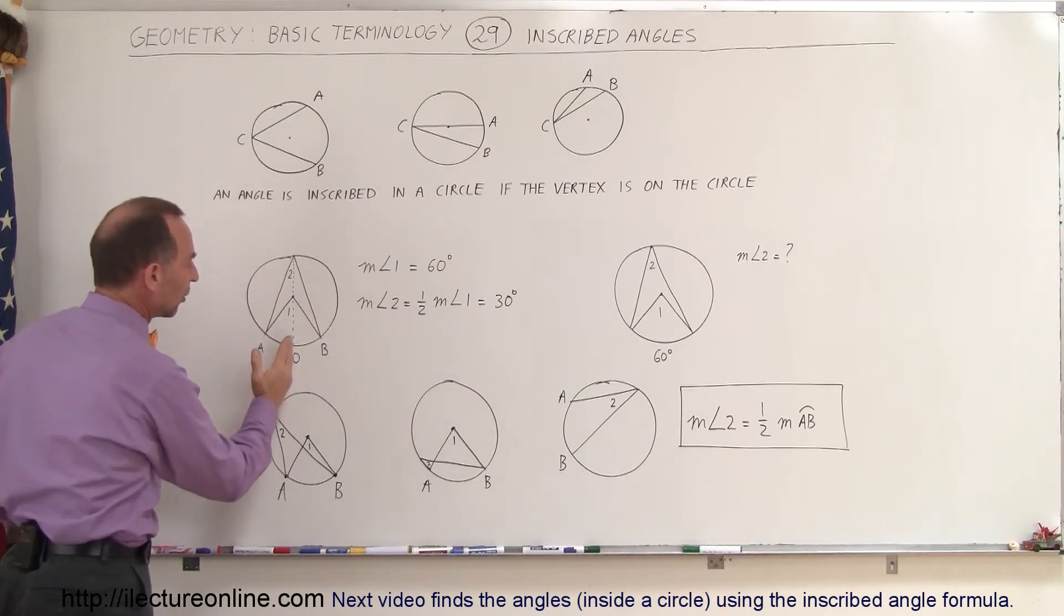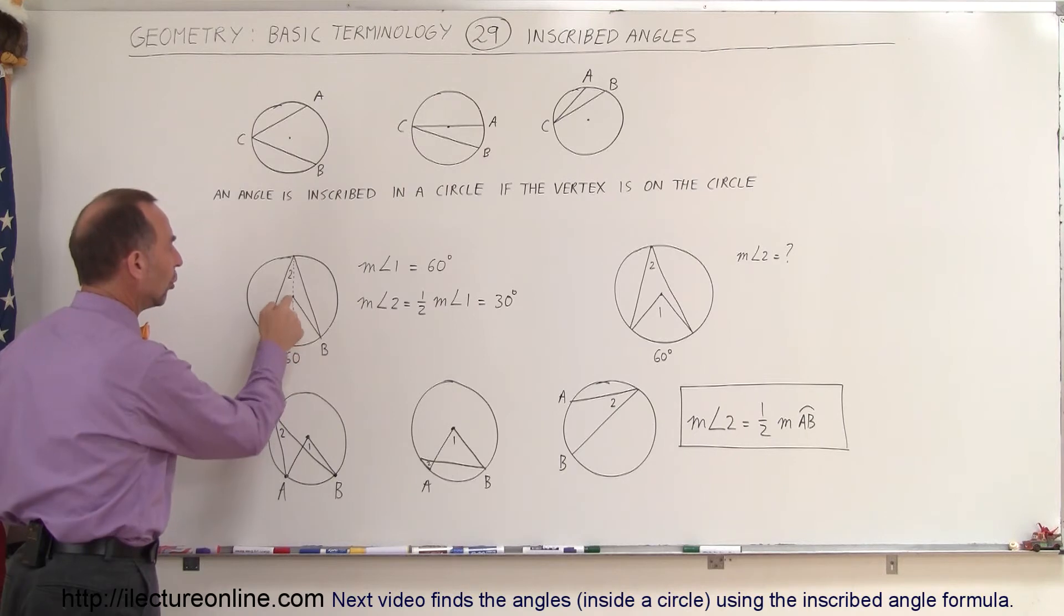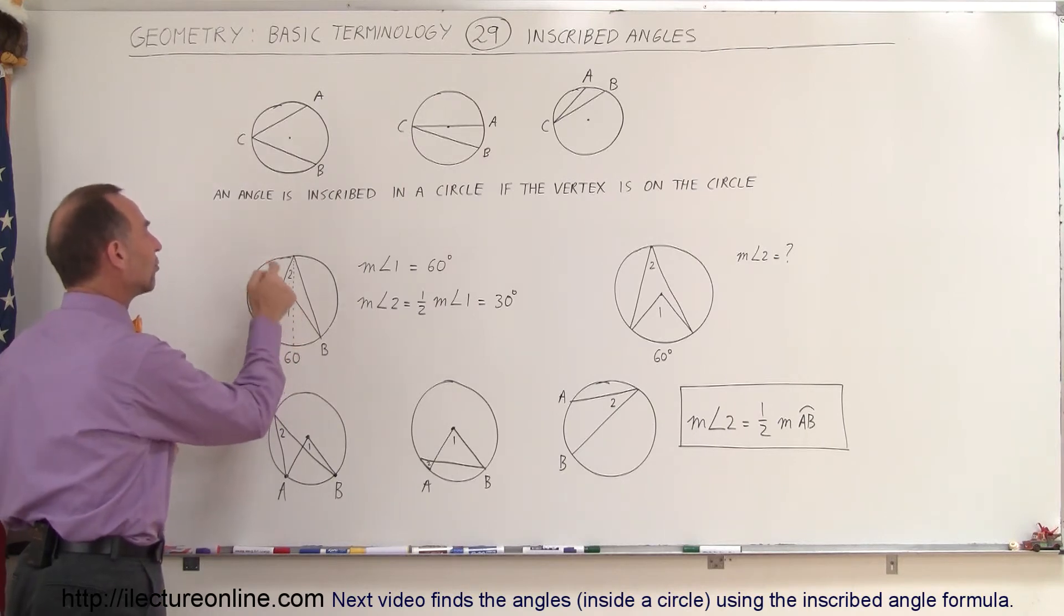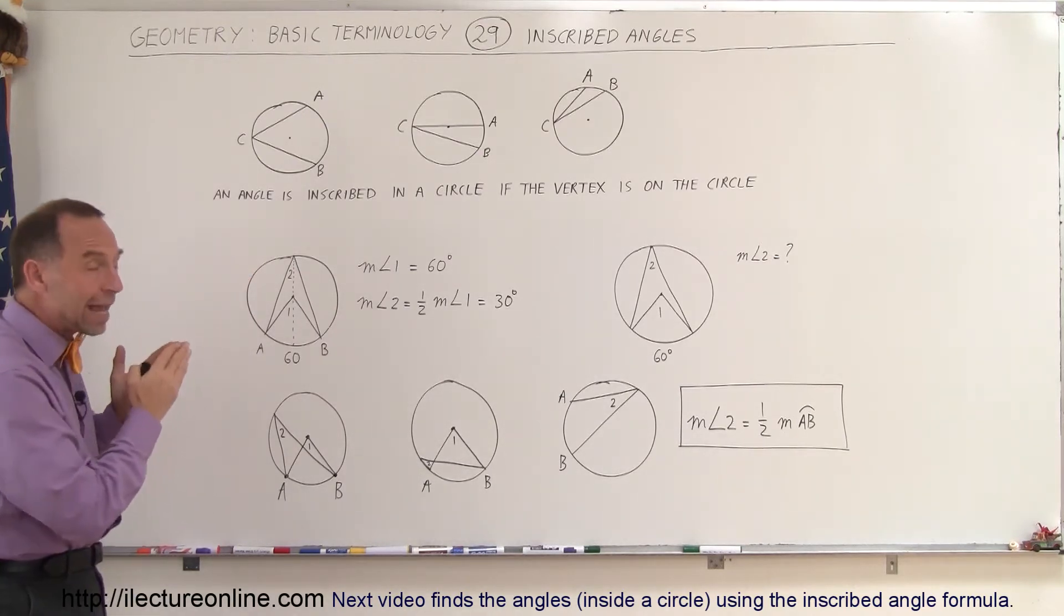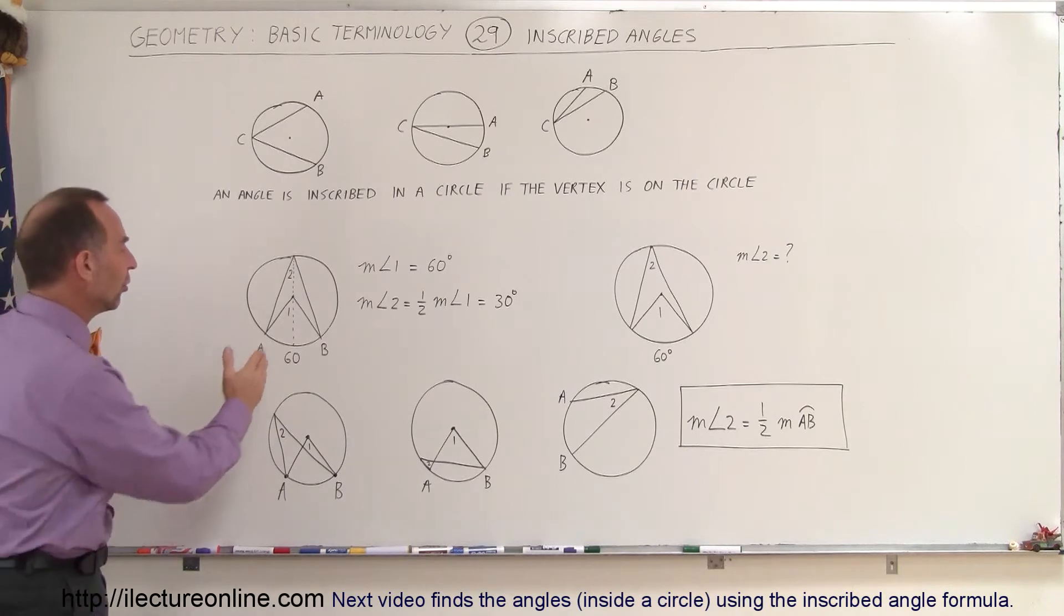And notice if I draw a line, a dashed line, from the edge of the circle through the vertex of the central angle and through the vertex of the inscribed angle, you can see that that line divides both angles in exactly two equal parts. So this is what we call the angle bisector for both angles.